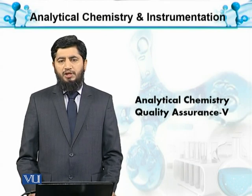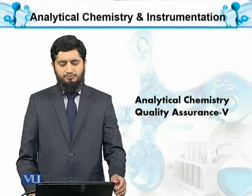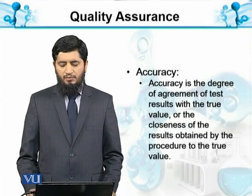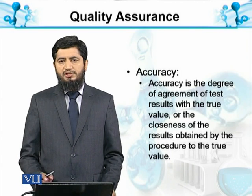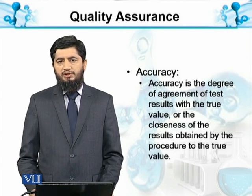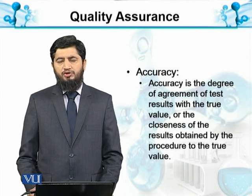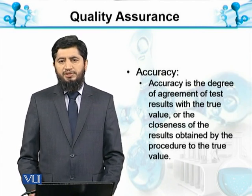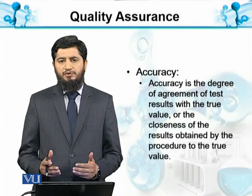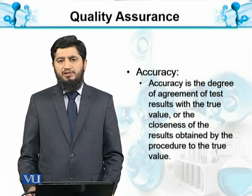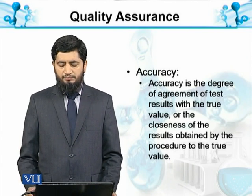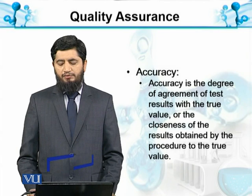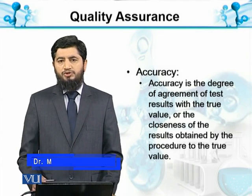In method validation, we will discuss accuracy. Accuracy is the degree of measurement — the variation between actual results and what we calculate. We have discussed accuracy in the matrix, where precision meant closeness of data to each other, and accuracy meant closeness to the actual value. Accuracy is the degree of agreement of the test result with the true value.